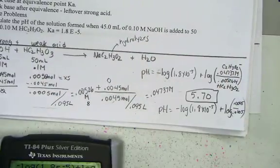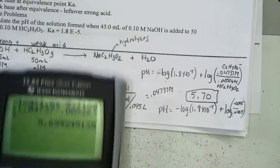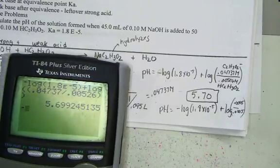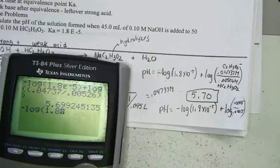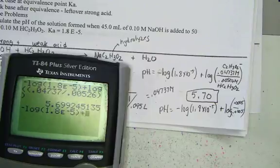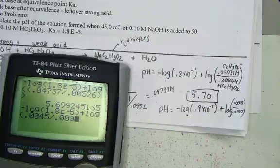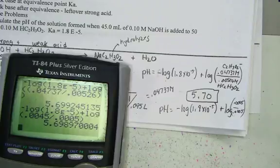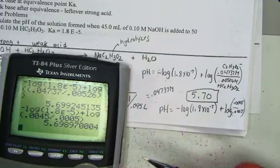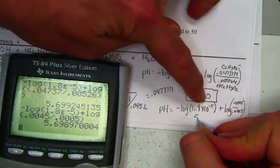Let's hit it the other way and compare the work. So again, negative log of 1.8 e negative 5 plus the log of the ratio of base over acid, 0.0045 over 0.0005. Instead of using molarity, we're just simply putting the number of moles and we get 5.698. Indeed, the same answer, 5.70 pH units.